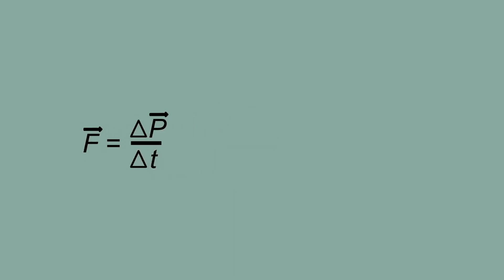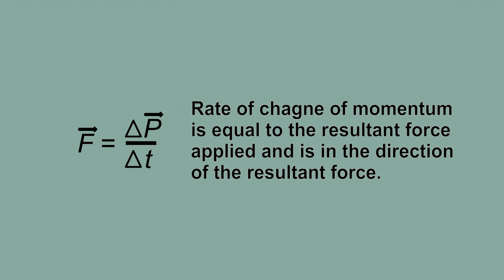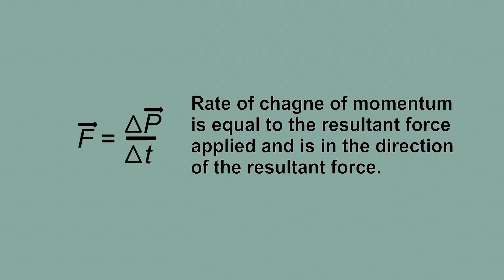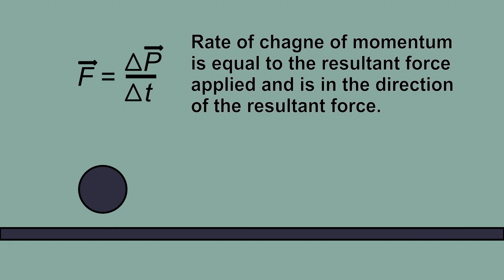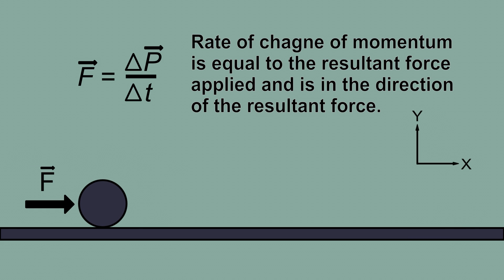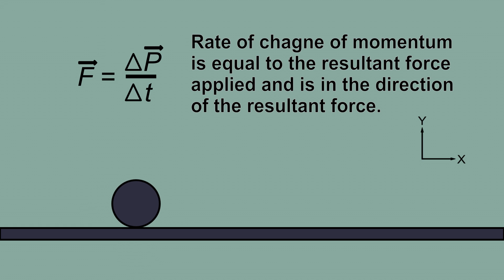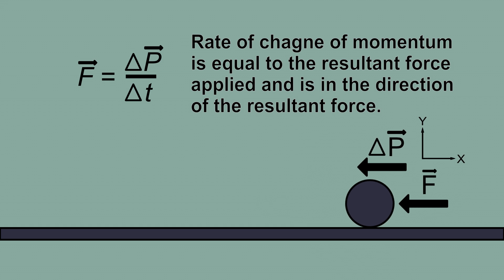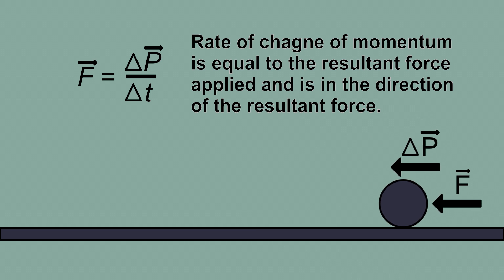Before going further, let's go back to school where we learned the equation f equals delta p by delta t. This equation tells us that the rate of change of momentum is equal to the resultant force applied, and is in the direction of that resultant force. In simple words, when you push a ball in the positive x direction, its momentum will change in the positive x direction. When you apply force in the opposite direction, the velocity increases in the negative x direction and the ball slowly comes to rest. This proves that the direction of change in momentum is in the direction of the applied force.